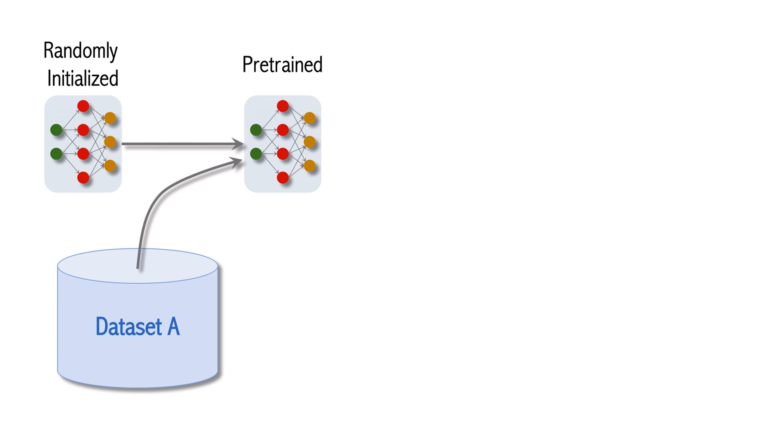We have finished building the vision transformer model. The next step is to train the model on image data. Firstly, random initialize the model. Then train the model on dataset A. Dataset A should be a large-scale dataset. This step is called pretraining. The result is a pretrained model.